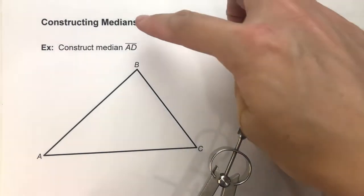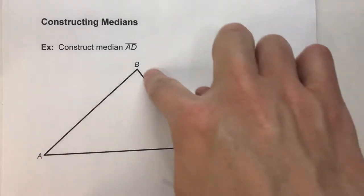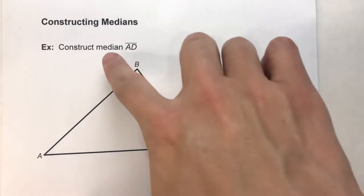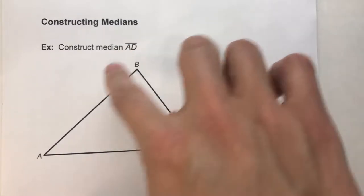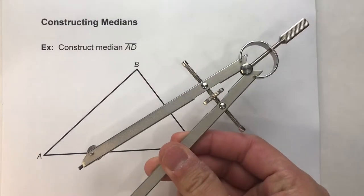So today, we are constructing the median of a triangle. Here's my triangle here, and we're going to construct median AD, that means the median off of vertex A, and we're going to construct it using a compass.